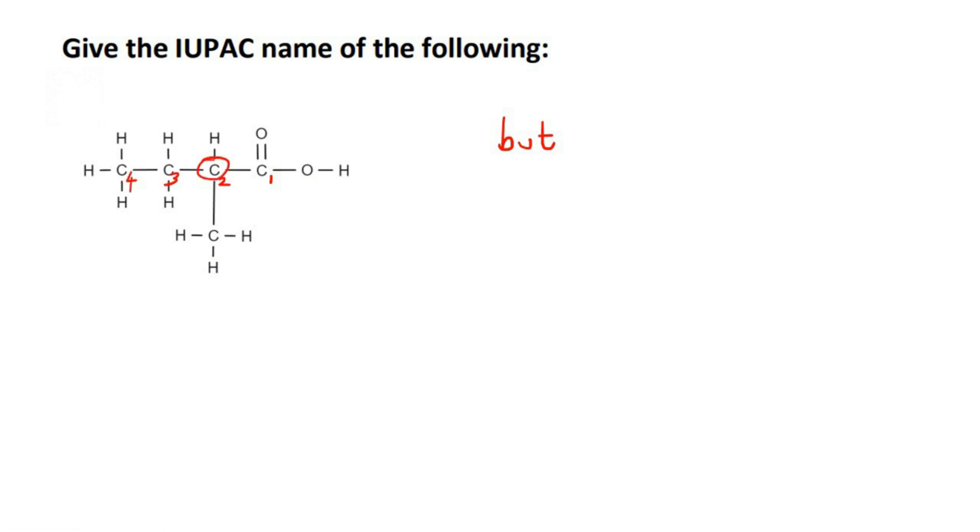So on carbon number two, you see there's a branch over here. How many carbons are in that branch? One. So that's meth. So you say that on carbon two, there is a methyl branch. We need to make this one word.